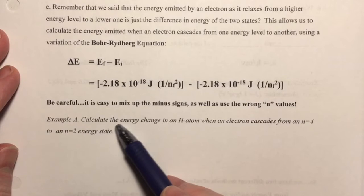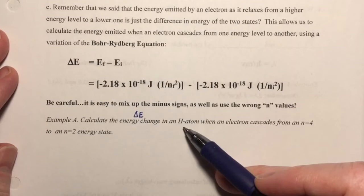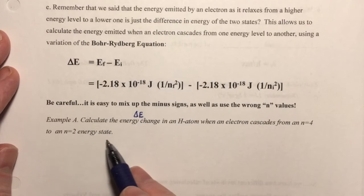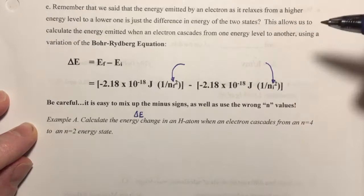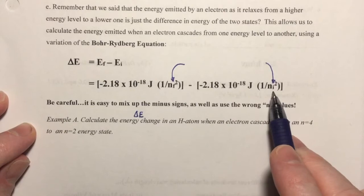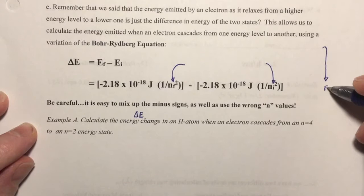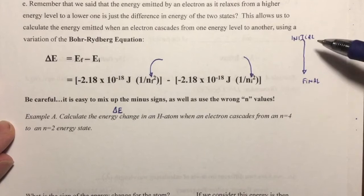That brings us to our first sample problem, Example A: calculate the energy change — the delta E — in a hydrogen atom when an electron cascades, meaning it falls from a higher to a lower level, from n equals 4 to an n equals 2 energy state. One of the most common mistakes students make is mixing up the final and initial values. If an electron is cascading or relaxing, the final value is going to be a lower number than the initial.